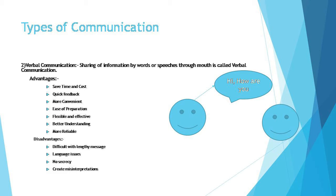Which are the characteristics of communication? It involves at least two persons — minimum two persons. There is exchange of ideas. It is a two-way process. It requires a medium. It is a continuous process. Communication is systematic, and it is influenced by cultural circumstances.